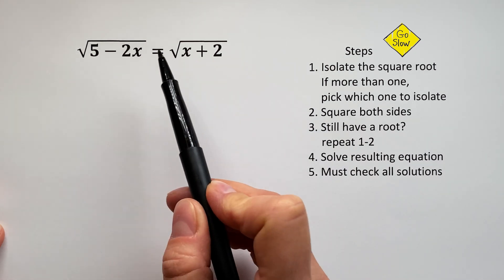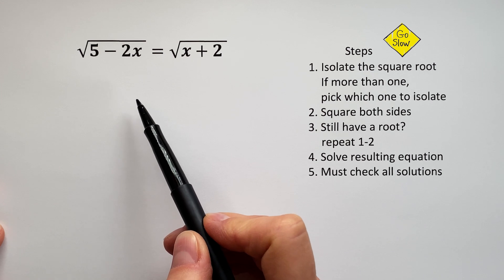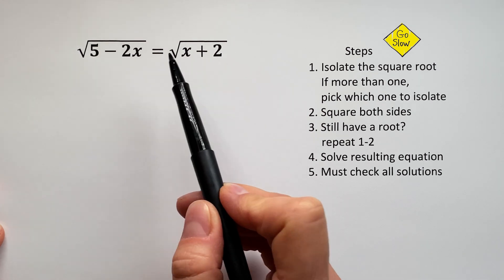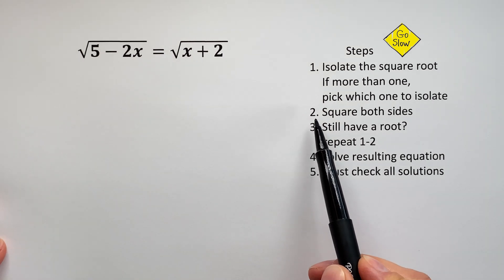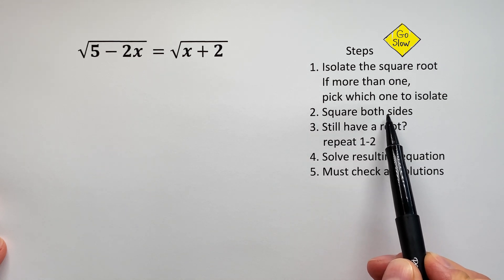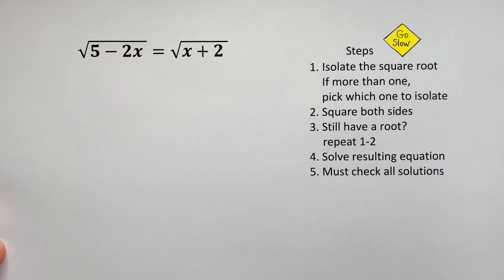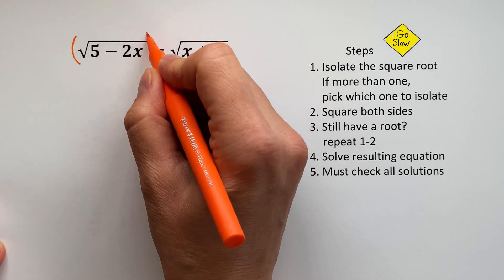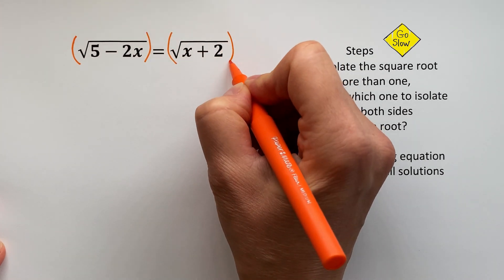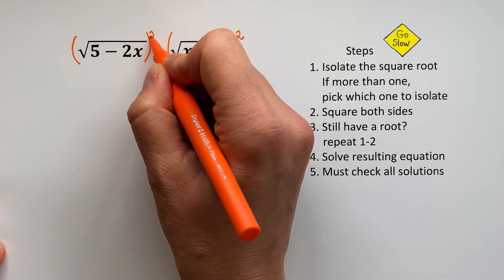We have two square roots, and they are both isolated, so we don't need to isolate them. The next step says square both sides. So let's square both sides in order to get rid of these two square roots and get X out of them.